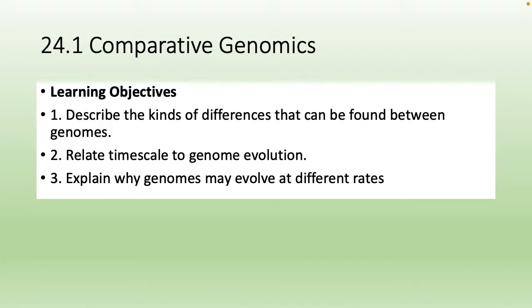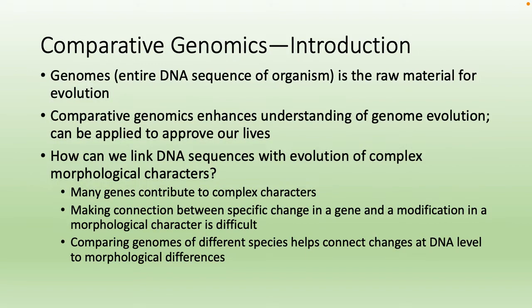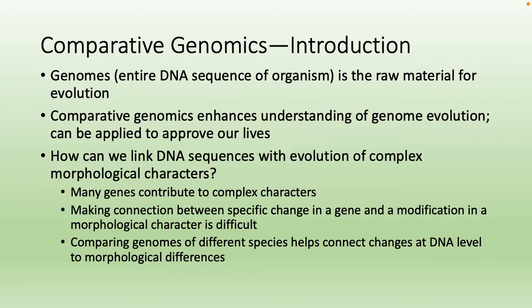First section: comparative genomics. Just a little introduction of what comparative genomics is. Genomes means that you have the DNA sequence of an organism entirely sequenced — it's the raw material for evolution. What comparative genomics does is analyze the organism's genome, figure out what each gene does, compare it to other organisms, and basically enhance our understanding of how genomes evolved. The end goal is how we can improve our lives — once we have our genome sequence, how can we improve that genome?